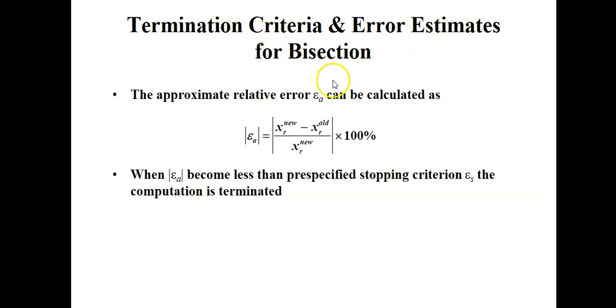You have seen this before, ea, what we call as approximate relative error, and this can be calculated using this equation. This is just simply your new root minus your previous root divided by your new root times hundred percent. You need to repeat your iteration until you get your ea less than pre-specified stopping criterion es. Then if you get your ea less than es, you can just terminate your computation.